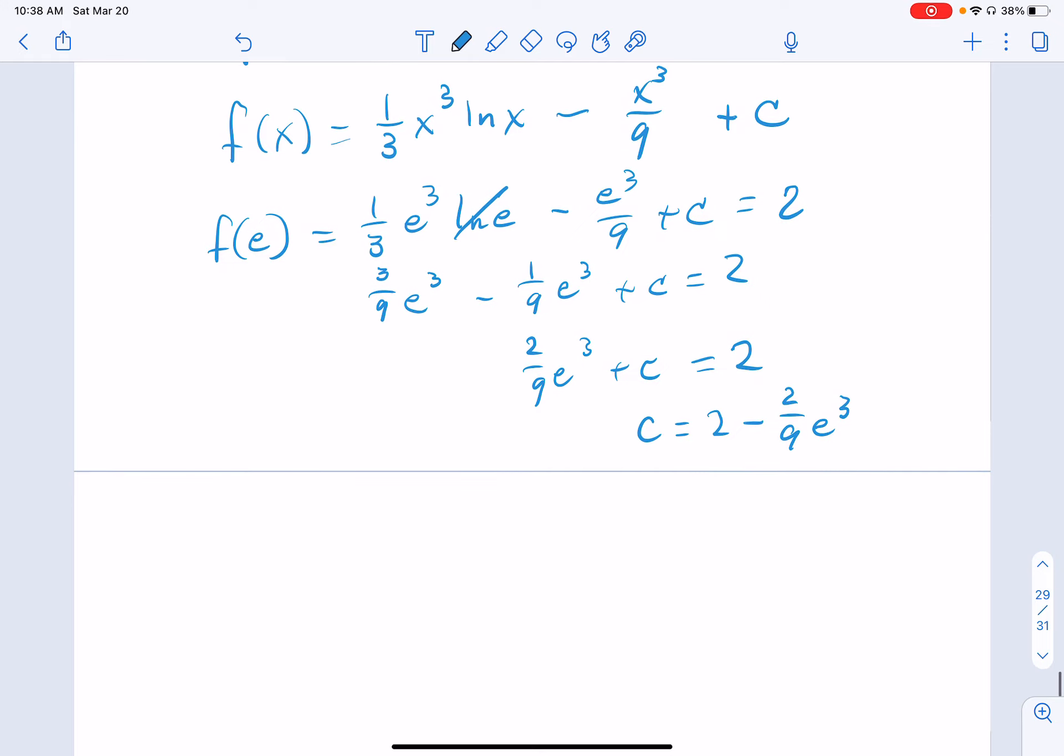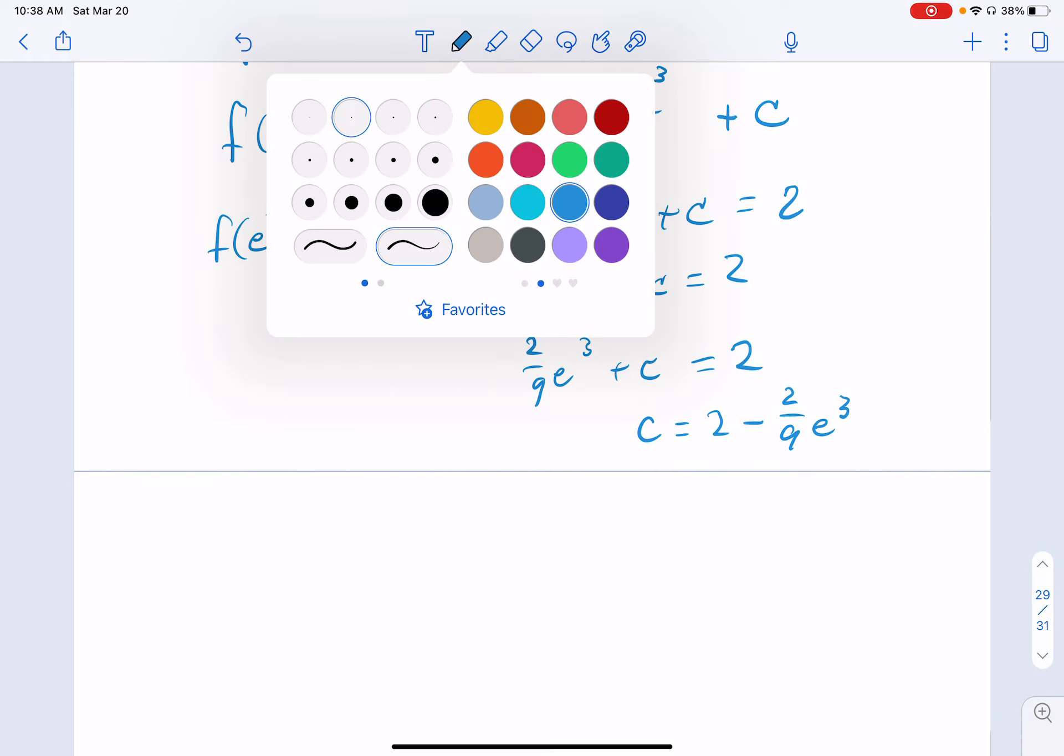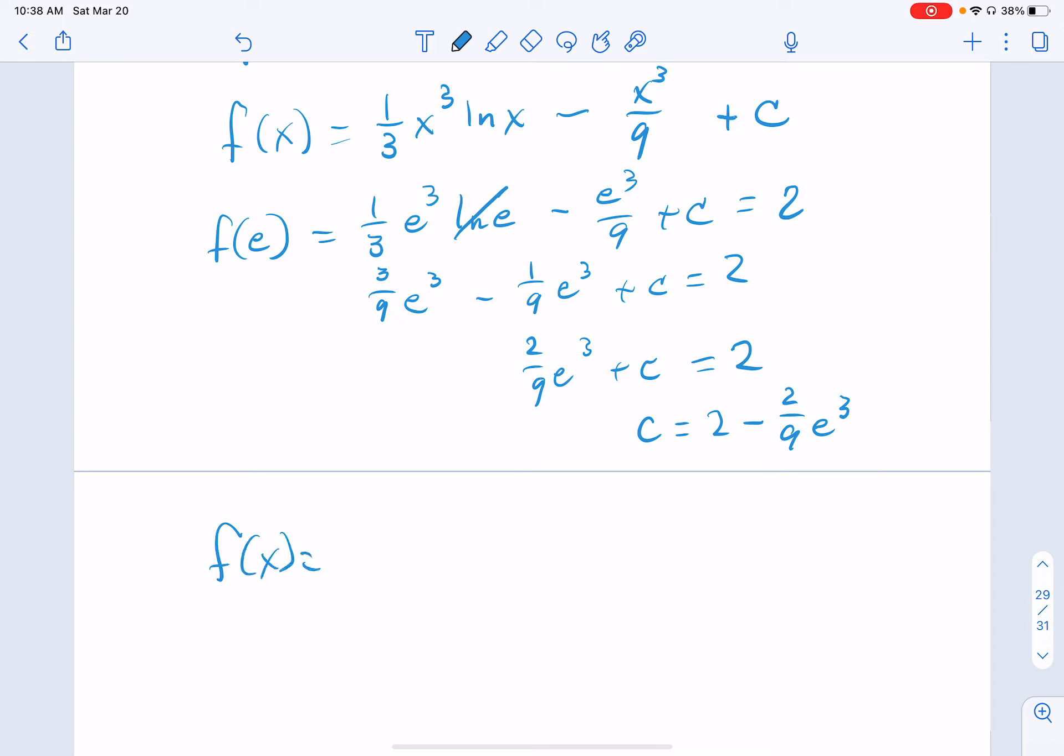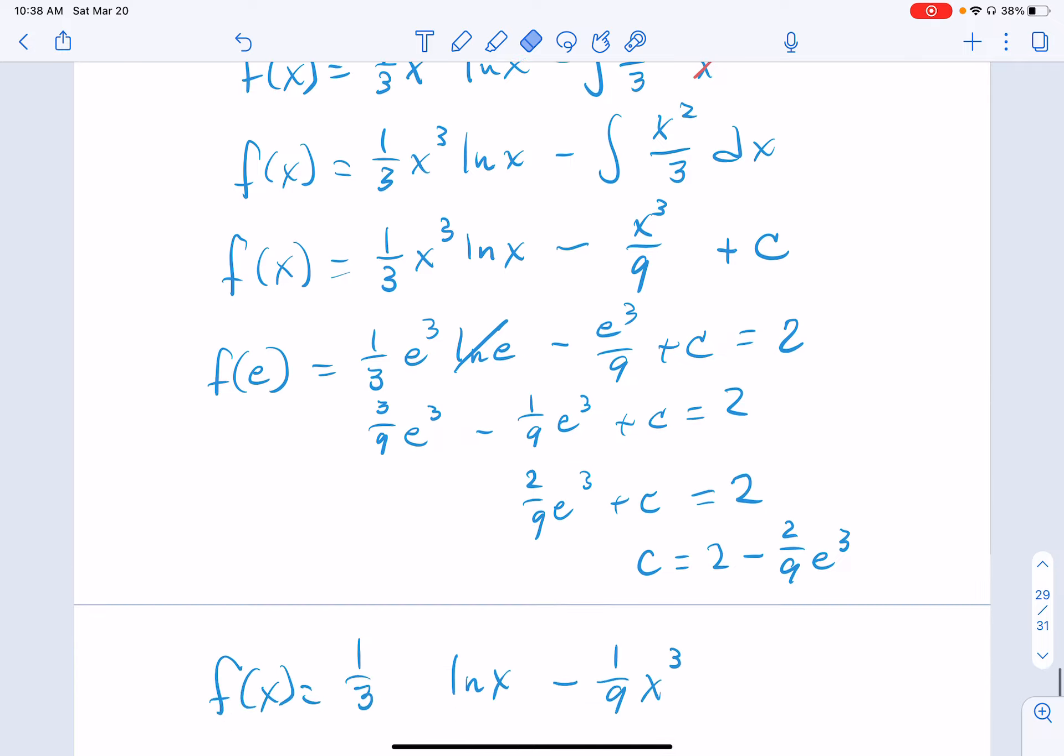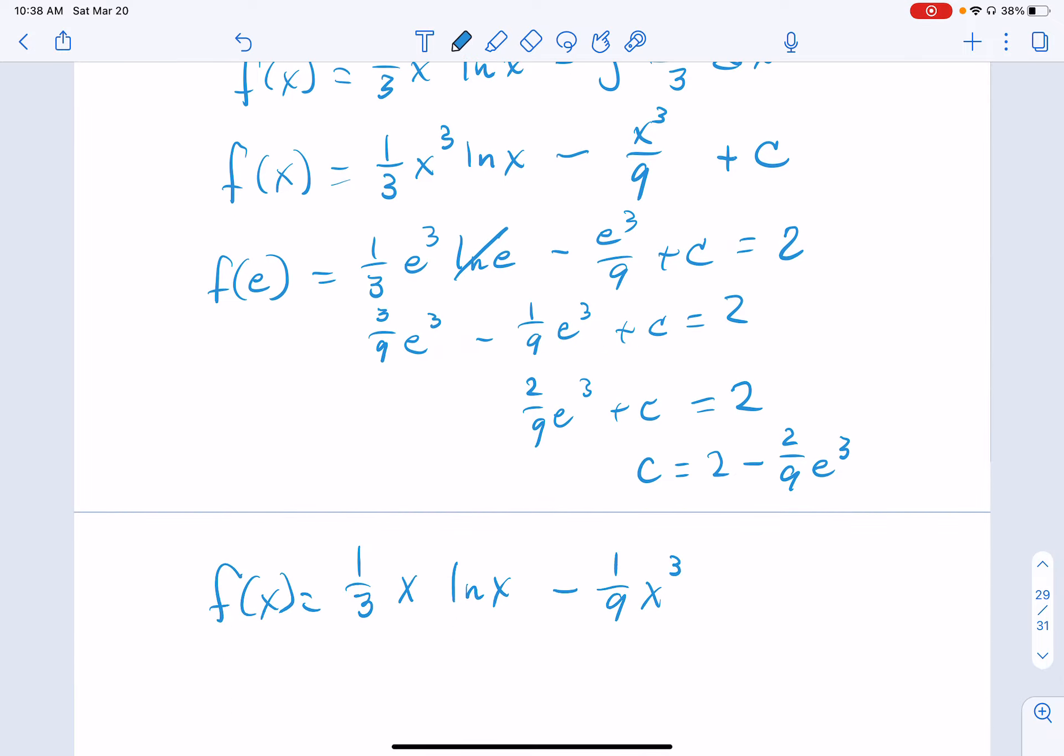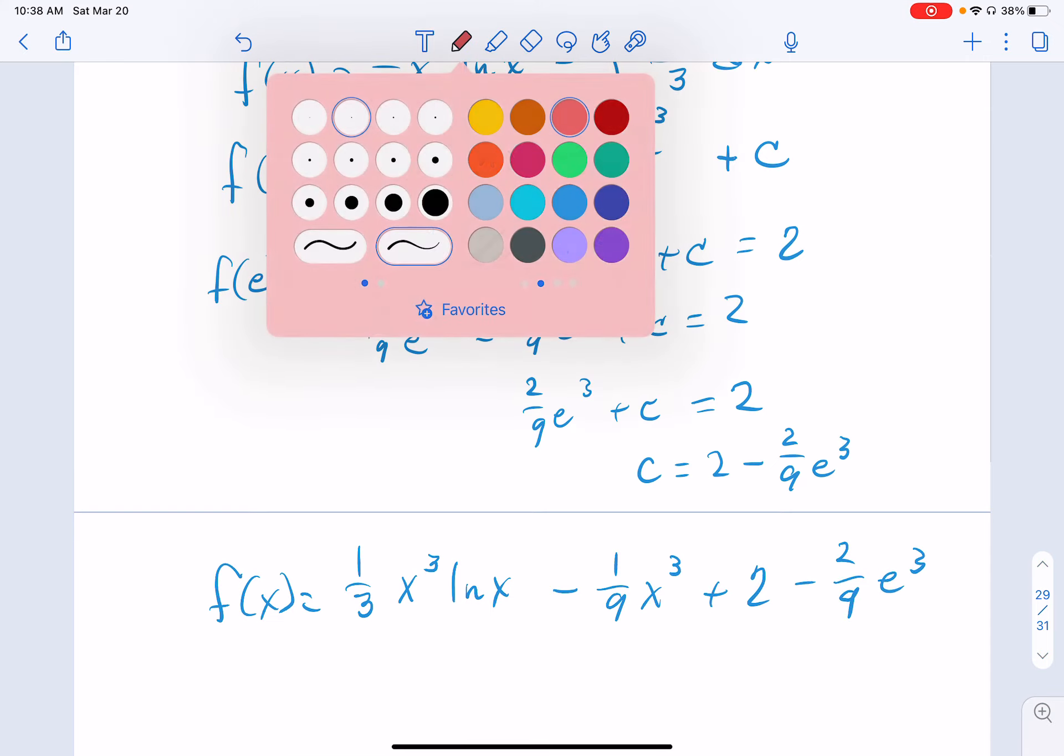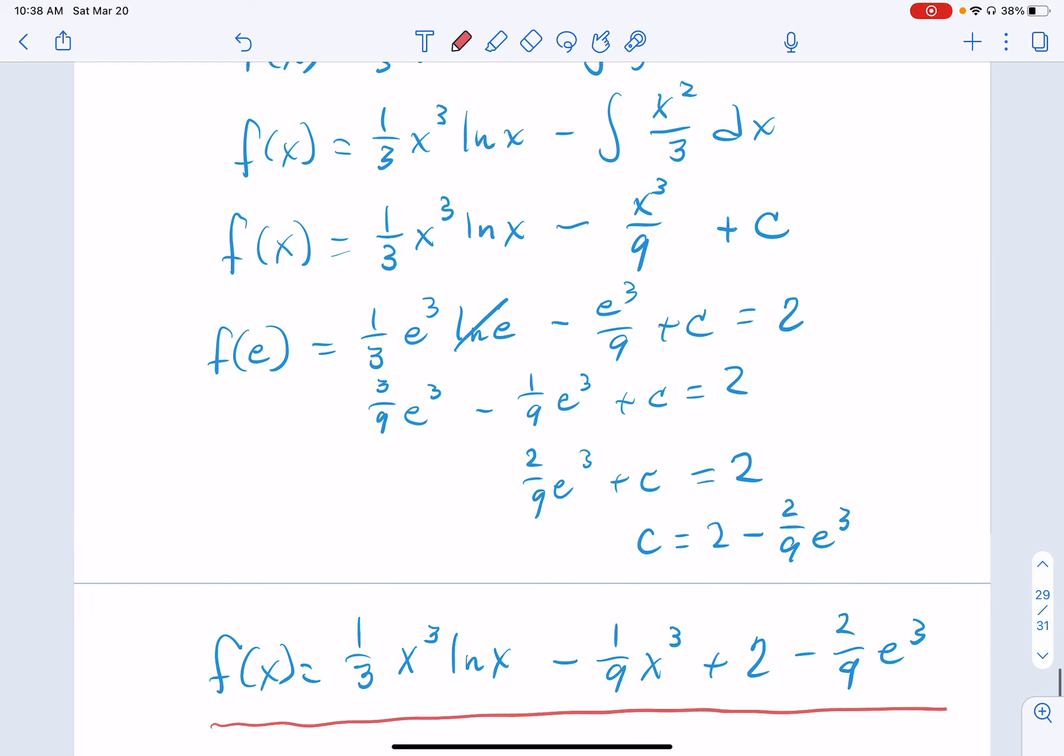So finally, write your answer as f of x is equal to 1 third x cubed natural log of x minus 1 ninth x cubed. This is not correct. What is this? It should have been an x cubed. I only had an e to the third because I plugged in e for my x coordinate. Well, that would have been a mistake that I could not recover from. And then add in your c, which is our 2 minus 2 ninths e cubed. And we're done.